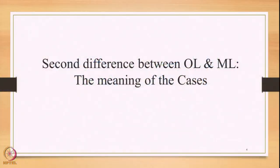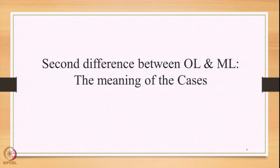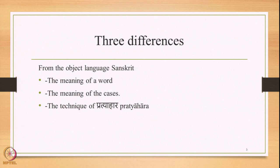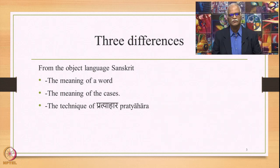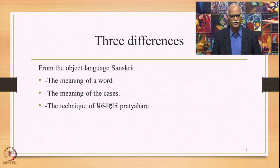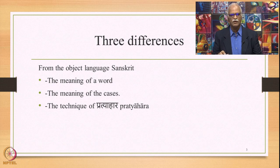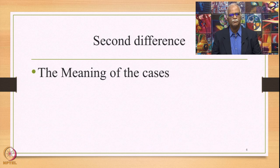The second difference between the object language Sanskrit and the meta-language Sanskrit is the meaning of the cases. To recap, there are three differences: the meaning of a word, the meaning of the cases, and the technique of Pratyahara. We have studied the meaning of a word. Now we will study the difference between the meaning of the cases. That is the topic of this lecture.